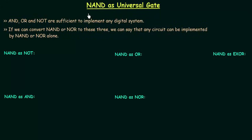In this lecture we will discuss why NAND is called a universal gate. In the first lecture on logic gates I told you we have two universal gates: NAND and NOR. We call them universal gates because we can implement any digital system by using NAND or NOR. Now we have to prove this statement, and for this we will first revise basic gates.